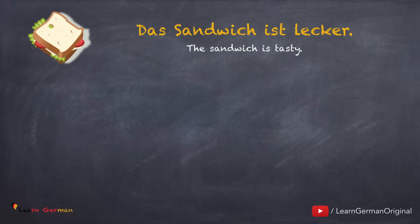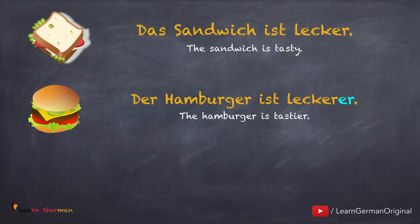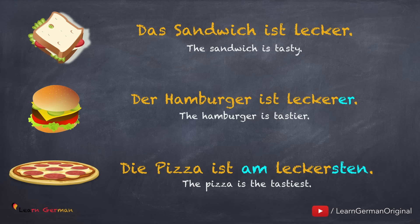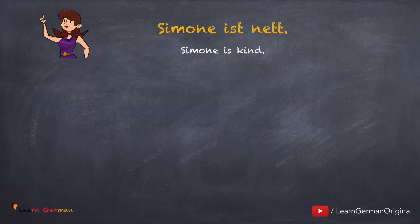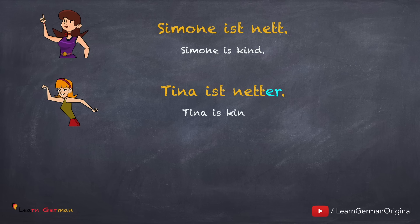Hier das nächste Beispiel. Das Sandwich ist lecker. Wenn wir Sandwich und Hamburger vergleichen, dann kann man sagen: der Hamburger ist leckerer — wir benutzen die Komparativform. Wenn wir das Sandwich, den Hamburger und die Pizza vergleichen, dann benutzt man den Superlativ. Hier ist noch ein Beispiel: Simone ist nett — das Adjektiv hier ist 'nett'. Tina ist netter — das ist die Komparativform. Martina ist am nettesten — im Superlativ.